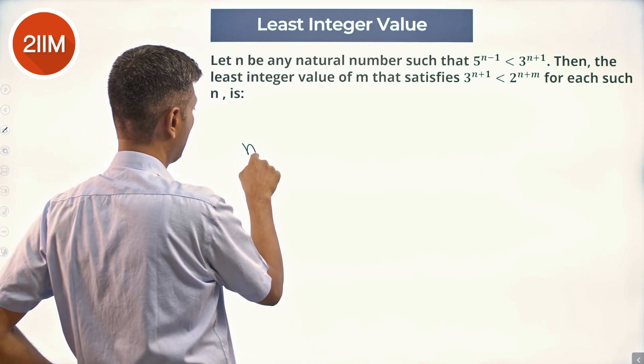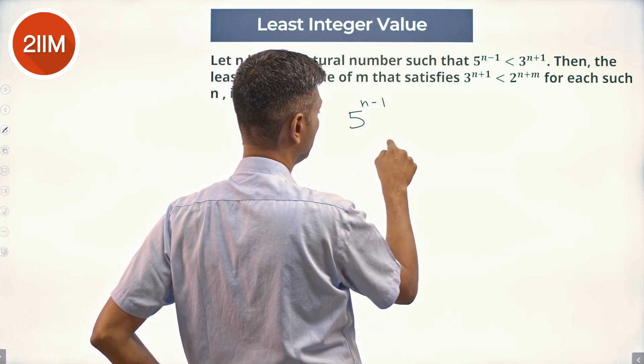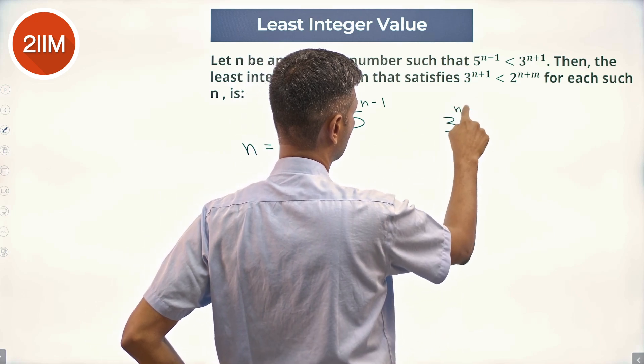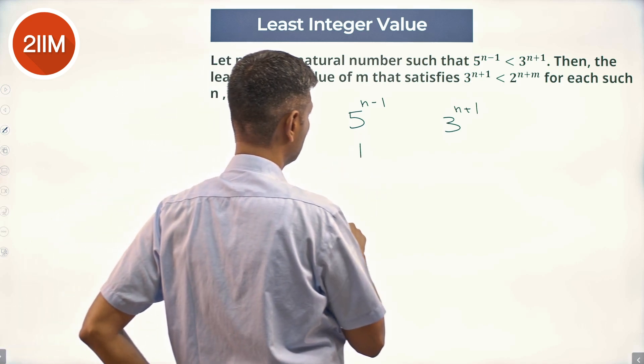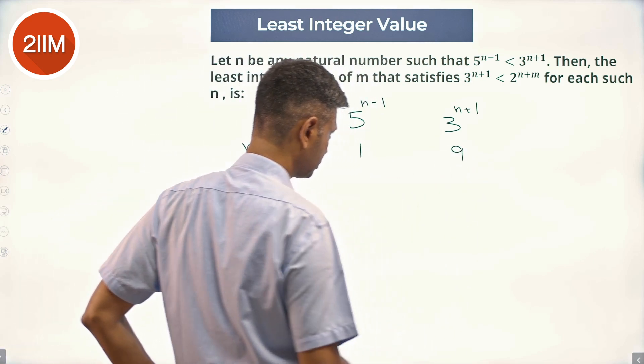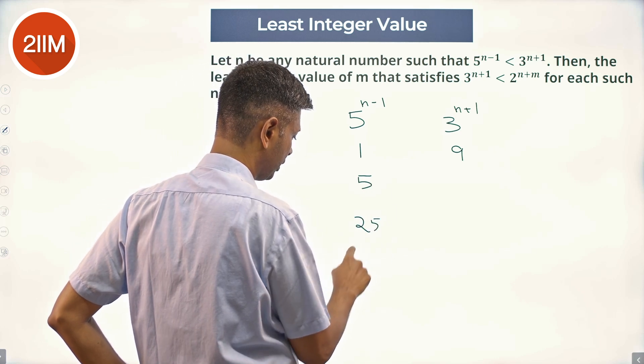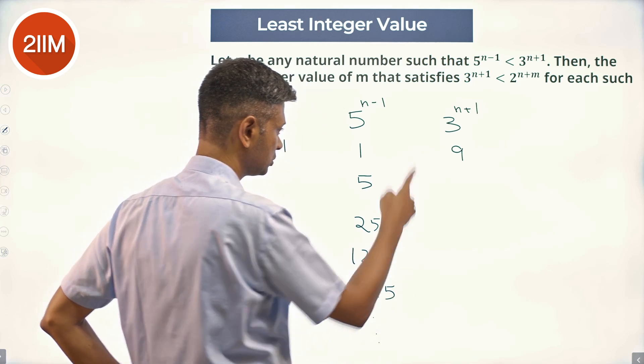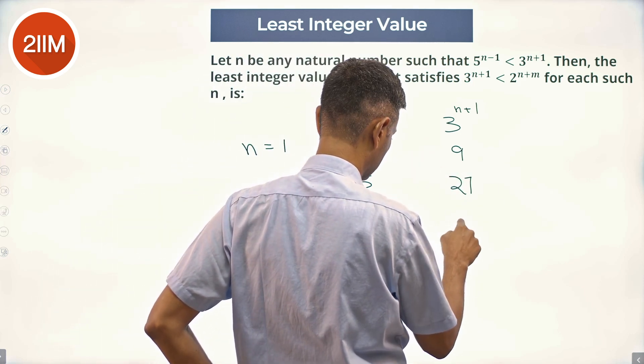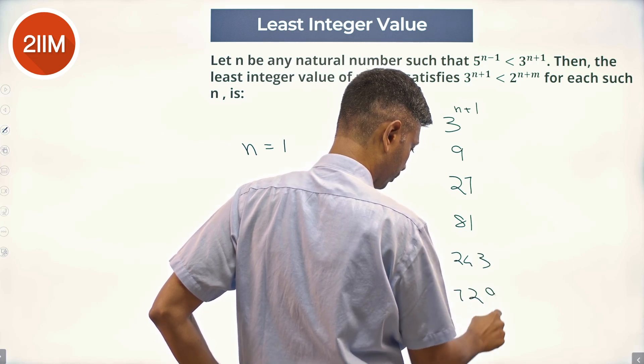What I'm going to do: let me say n equals 1. I'm going to think about 5^(n-1), I'm going to think about 3^(n+1). So 5^0 is 1, 3^2 is 9. I'm going to write powers of 5: 1, 5, 25, 125, 625 and so on. Powers of 3: 9, 27, 81, 243, 729 and so on.